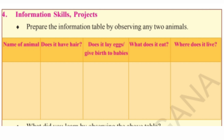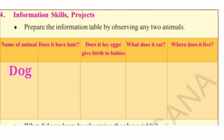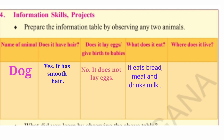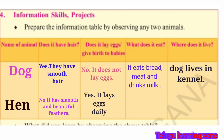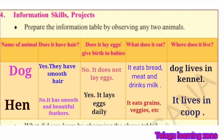Information Skills Projects: Prepare the information table by observing any two animals — name of the animal, does it have hair, does it lay eggs or give birth to babies, what does it eat, where does it live? Answer: Name of the animal — Dog. Yes, it has smooth hair. No, it does not lay eggs. It eats bread, meat and drinks milk. Dog lives in a kennel. Next, Hen: Does it have hair? No, but it has smooth and beautiful feathers. Yes, it lays eggs daily. It eats grains, veggies, etc. It lives in a coop.